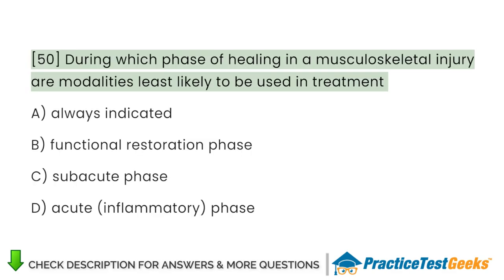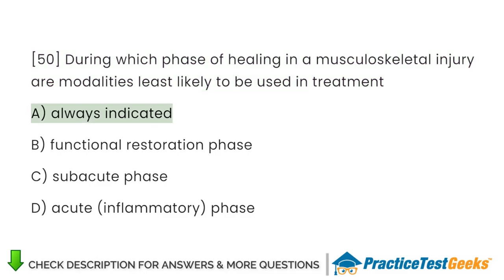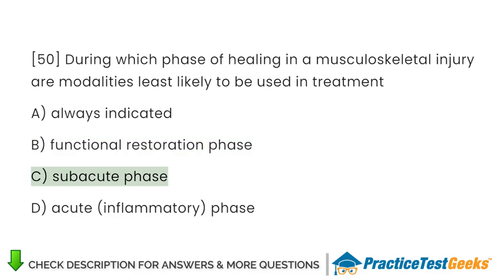During which phase of healing in a musculoskeletal injury are modalities least likely to be used in treatment? A. Always indicated. B. Functional restoration phase. C. Subacute phase. D. Acute inflammatory phase.